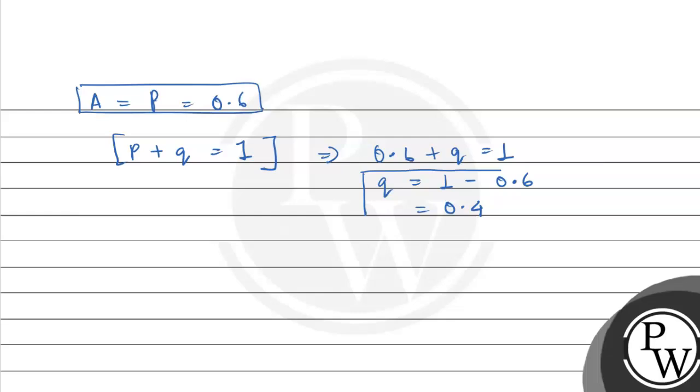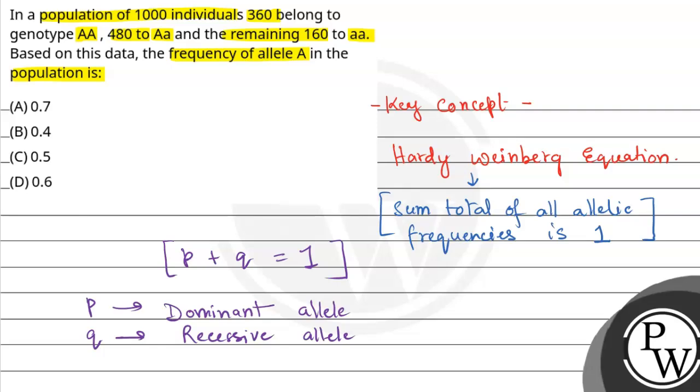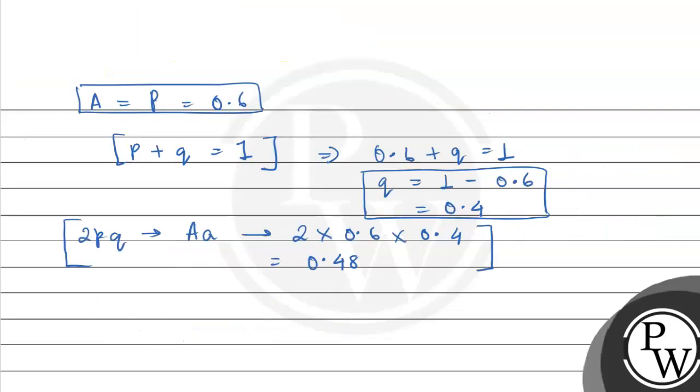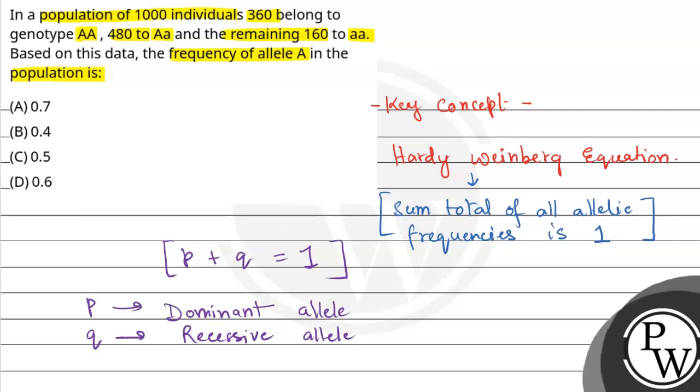So here the homozygous recessive condition population ratio we're seeing is 0.4. The question asked, frequency of allele A, that is capital A, in the population is. So if we look at capital A's value, it is 0.6. So our answer to this question will be option D, 0.6.